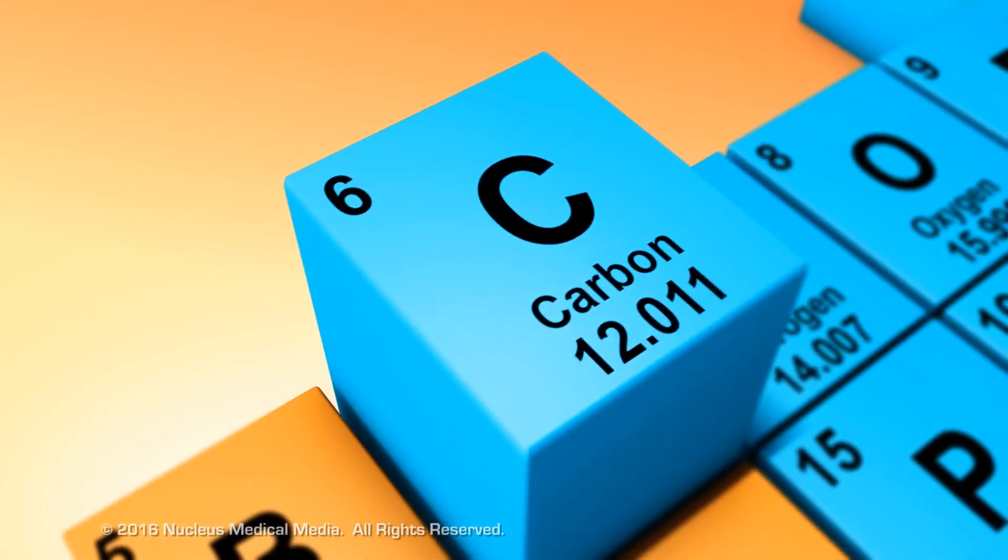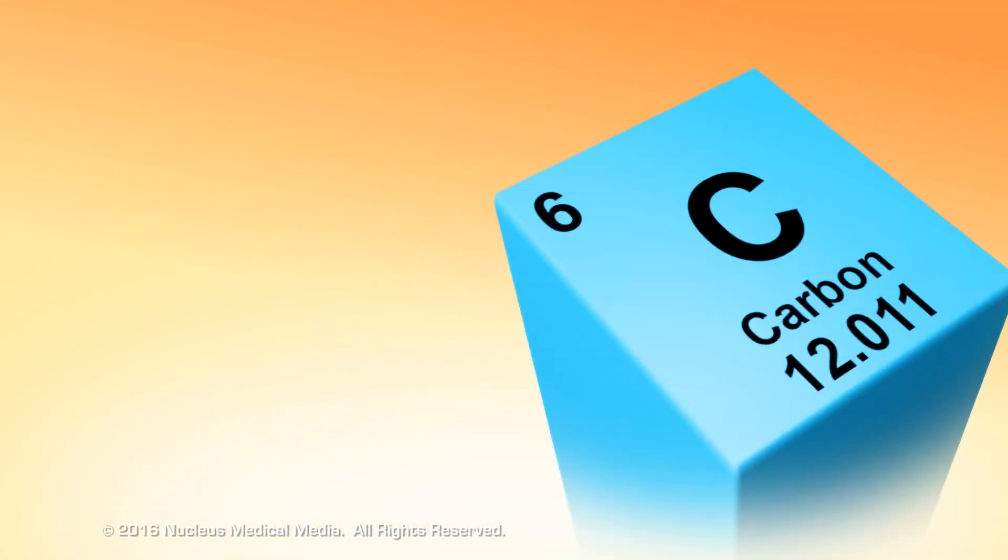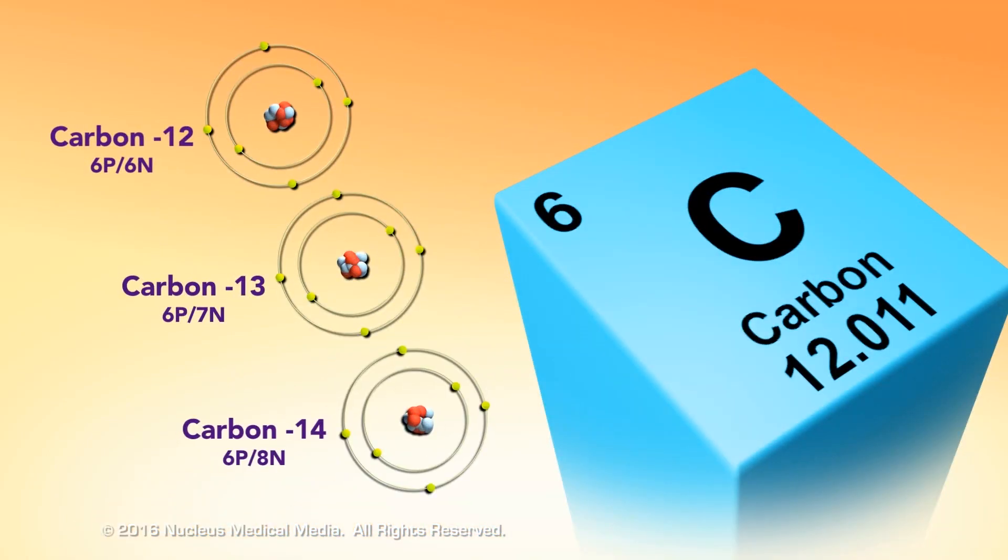The larger number represents the atomic mass. Notice that the atomic mass of many elements is a decimal number rather than a whole number. This is because the atomic mass is a weighted average of the mass numbers for the isotopes of an element.